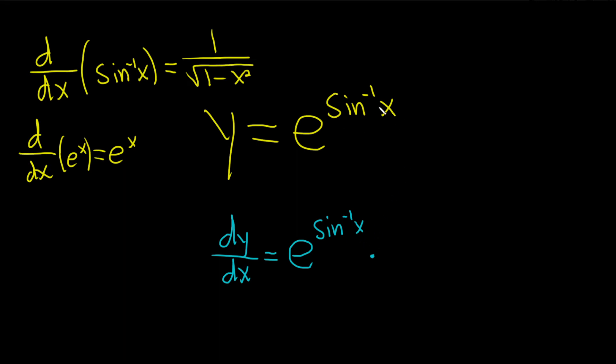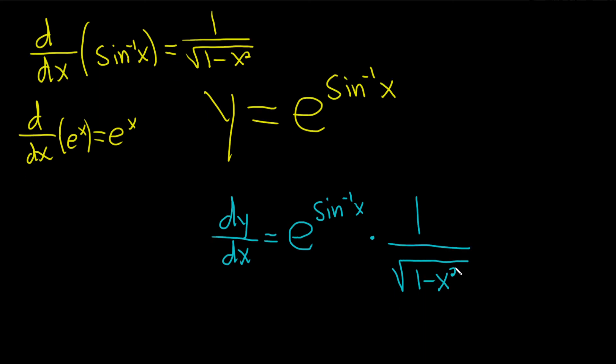So the inside function is inverse sine and its derivative is right here. So 1 over the square root of 1 minus x squared. And that's actually the answer.